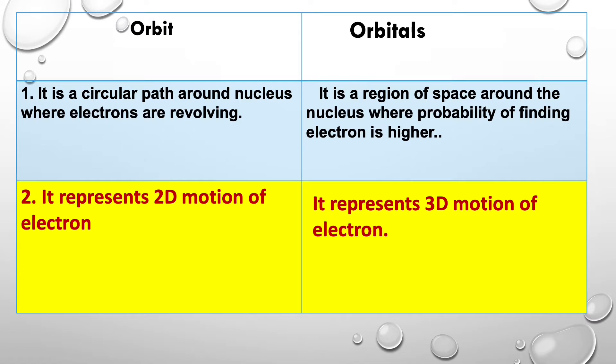Orbit represents 2D motion of the electron, whereas orbitals represent 3D motion of the electron.